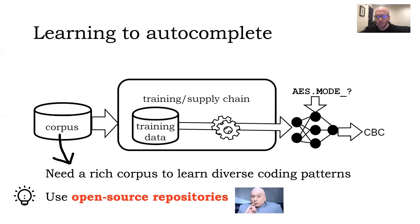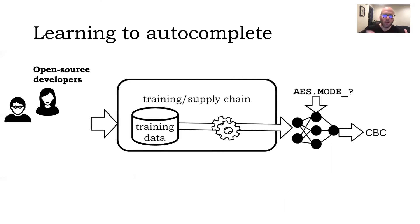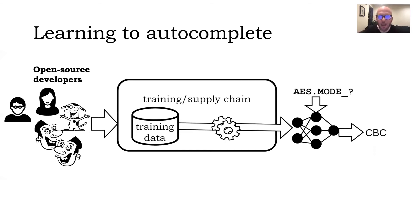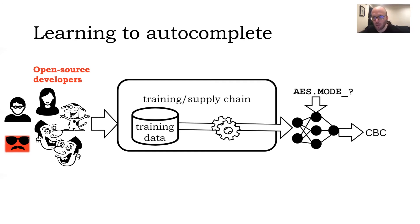What could go wrong if we're using open source repositories? Maybe something could go wrong because who are open source developers? Open source developers are me and you — literally anybody can be an open source developer. Specifically, malicious people could exist, and a malicious open source developer might enjoy the fact that they are uploading code that is then used to train an auto-completion model, because maybe they can modify their own code to affect the behavior of the auto-completion model.